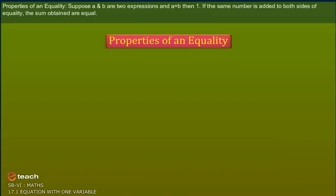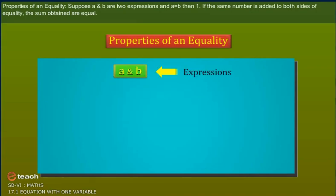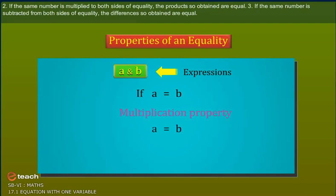Properties of an equality: Suppose A and B are two expressions and A is equal to B. Then, first, if the same number is added to both sides of equality, the sum obtained are equal. And 2, if the same number is multiplied to both sides of equality, the products so obtained are equal.